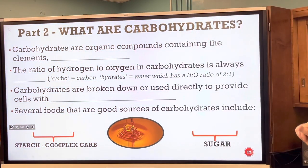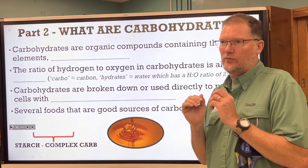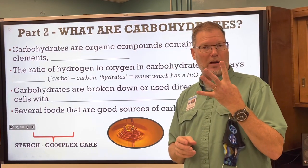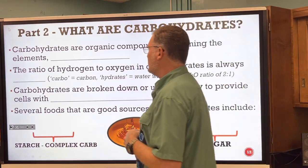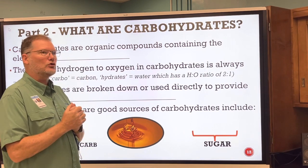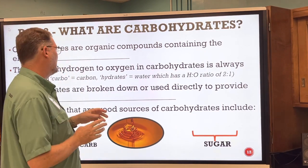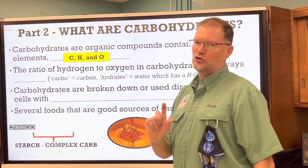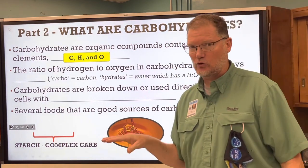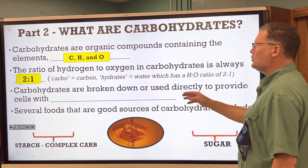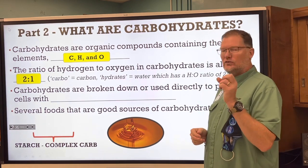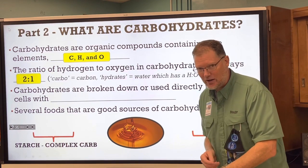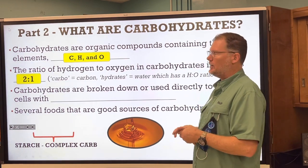We're on slide 17, talking about carbohydrates — the first of the four macromolecules. Carbohydrates are organic compounds that contain carbon, hydrogen, and oxygen. There's no nitrogen in carbohydrates. The ratio of hydrogen to oxygen is always two to one — you always have double the amount of hydrogen as oxygen. Carbo means carbon, hydrates means water, which also has a two-to-one ratio for hydrogen and oxygen.